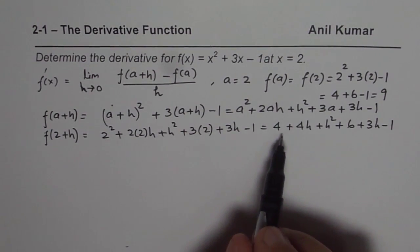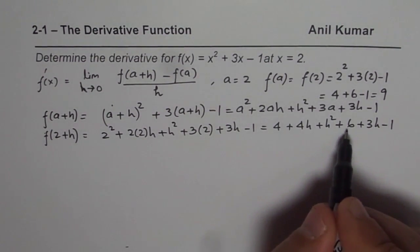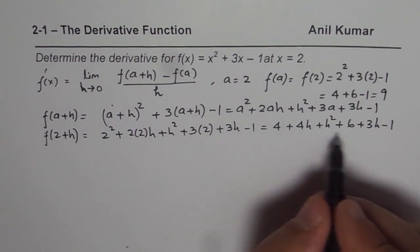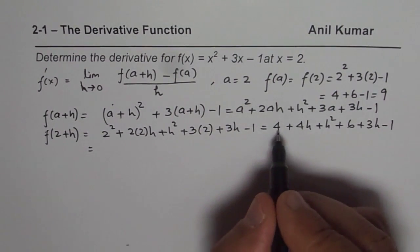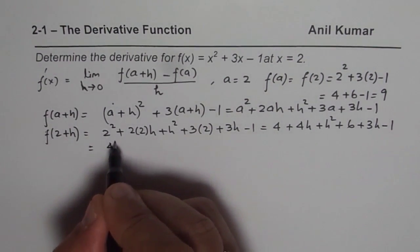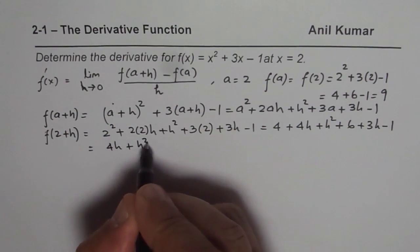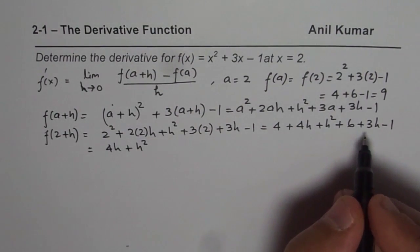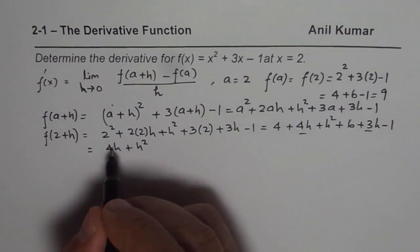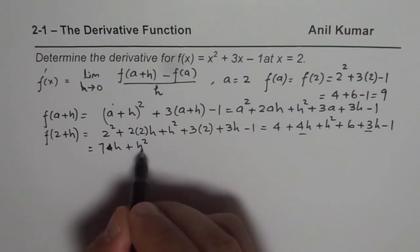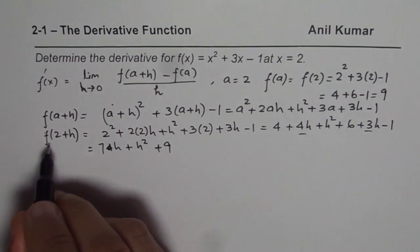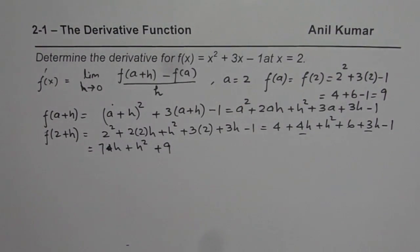Now what we can do is, we can combine these terms. The constants here are, so is equal to 4 plus, 4 plus 6 is 10, 10 minus 1 is 9. So what we get here is, 4 h plus h square, 4 plus 3 h is 7 h. So let me add these two also, let me write this as 7 h plus h square plus 9. So that is f of 2 plus h.